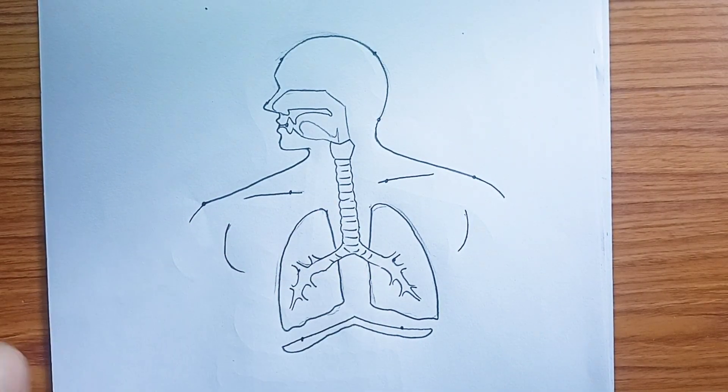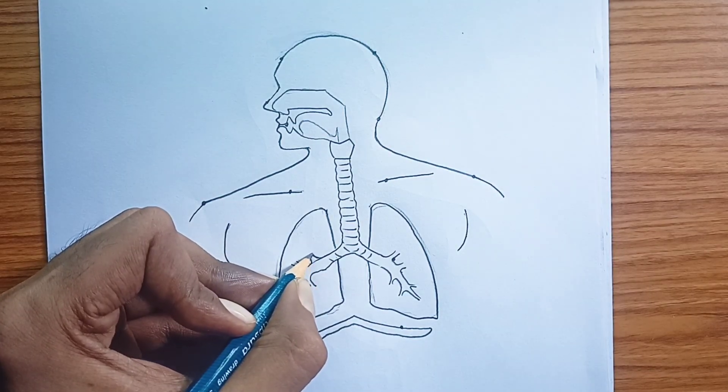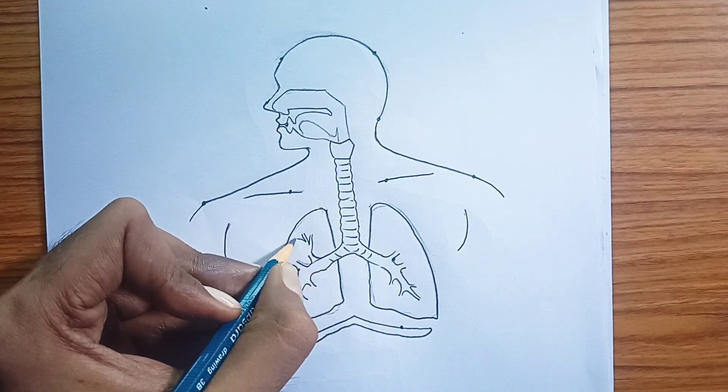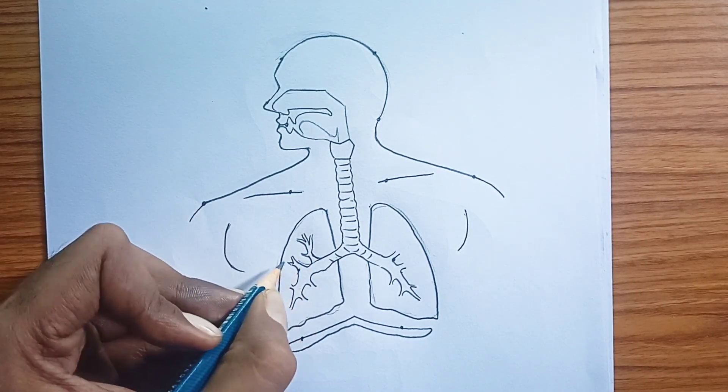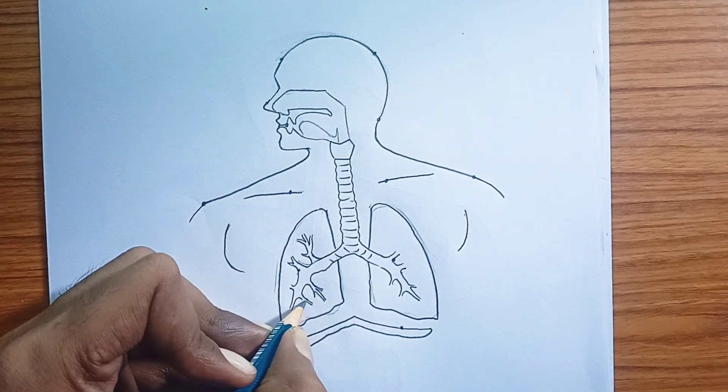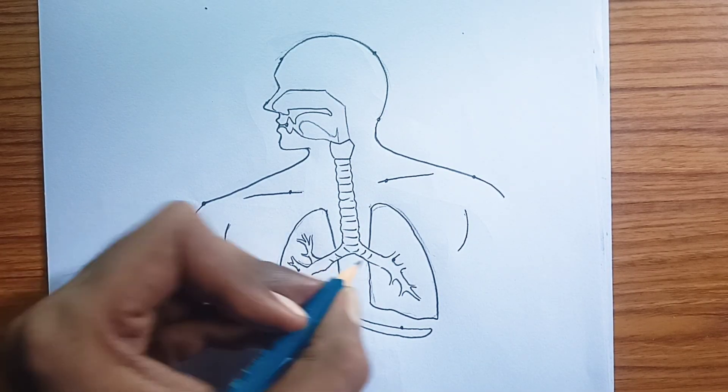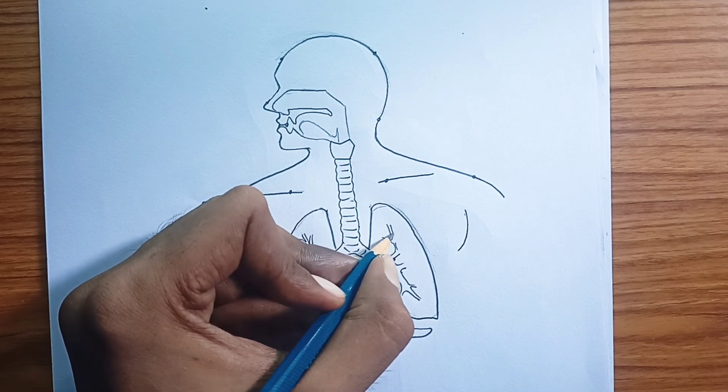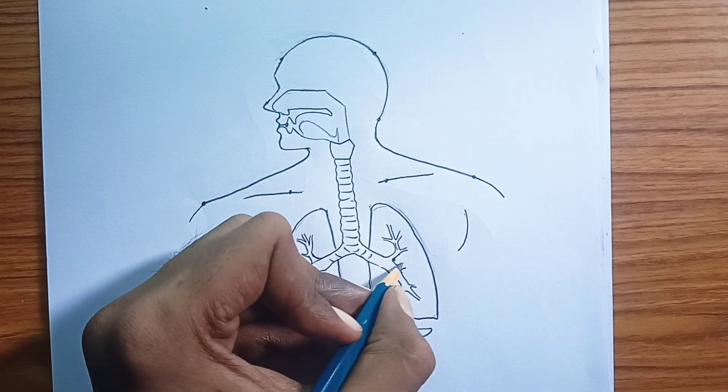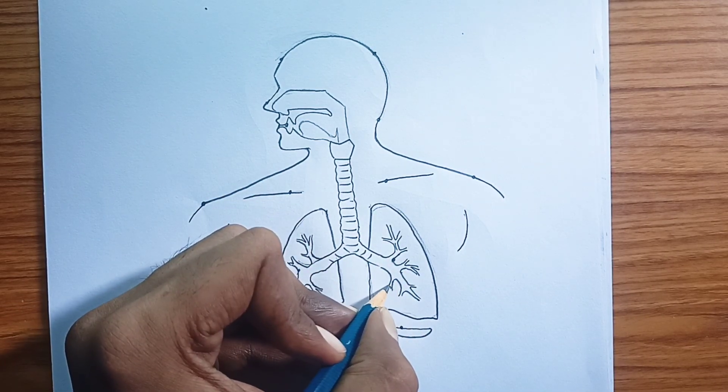The tiniest bronchioles eventually lead to tiny air sacs called alveoli. These are the workhorses of the respiratory system. The alveoli are surrounded by a dense network of tiny blood vessels called capillaries. It's here that the crucial gas exchange takes place.